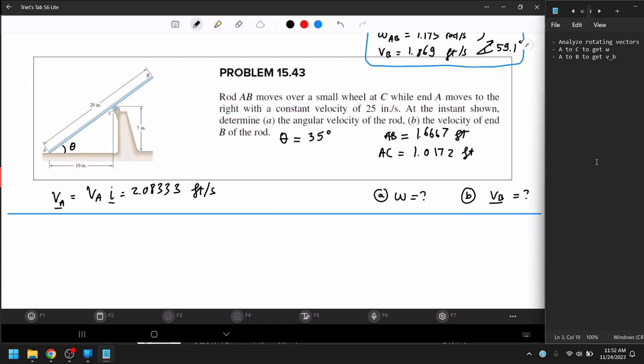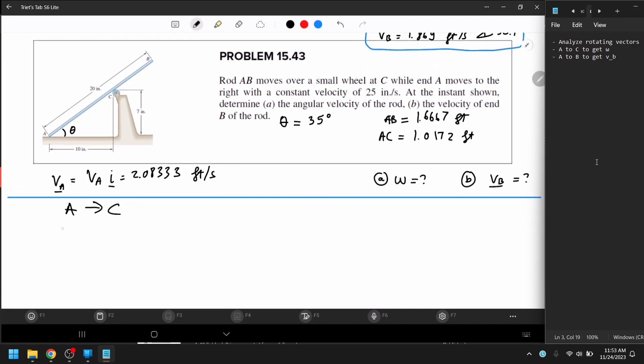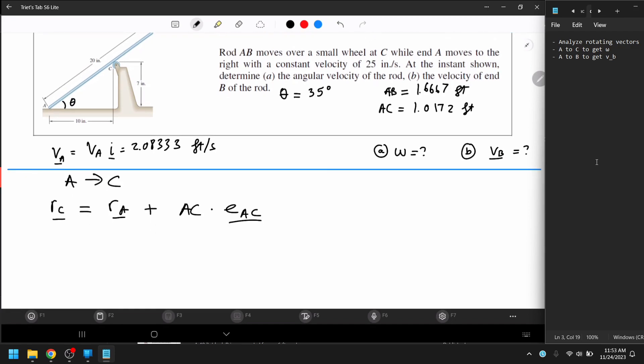So, we're just going to go ahead and analyze the rotating vector. From A to B, we're going to have A plus C, equal to R_A, cross A C, times E_AC, and you take the derivative, V_C is going to be V_A plus AC omega, which is what we're finding, and then E_AC.